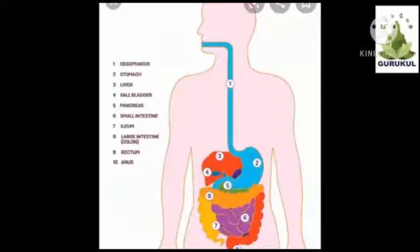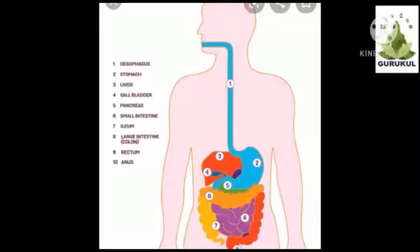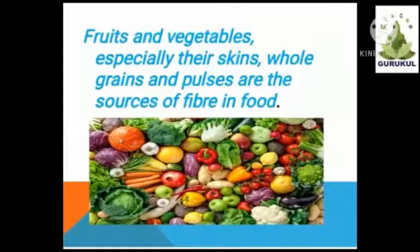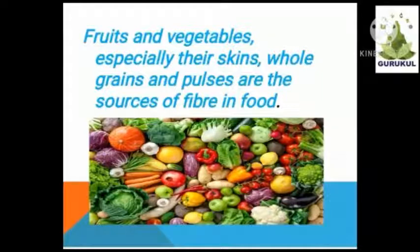That's why the digestion process in our body gets easy. Fibre is also called roughage. Fruits and vegetables — especially their skins — whole grains and pulses are all sources of fibre in food.